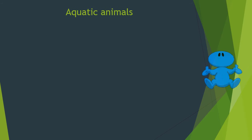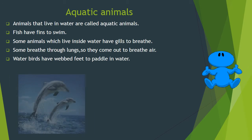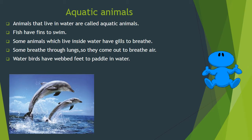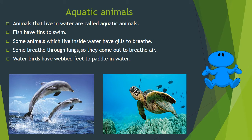Animals that live in water are called aquatic animals. Fish have fins to swim. Some animals which live inside water have gills to breathe, while some breathe through lungs, so they come out to breathe air. Water birds have webbed feet to paddle in water. For example: dolphin, turtle.